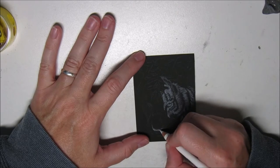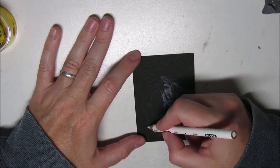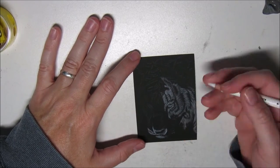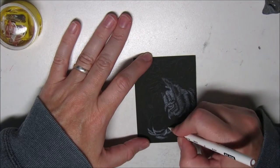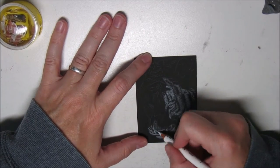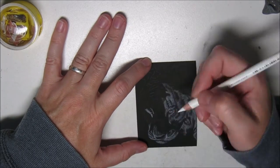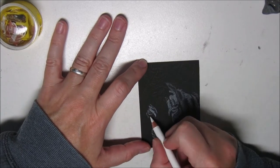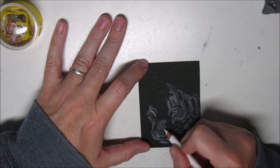Then I took a white pencil, which I sharpened to a very fine point, and I started working on the underpainting. I used only lines going in the direction of the fur.